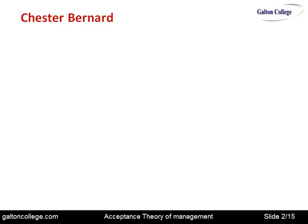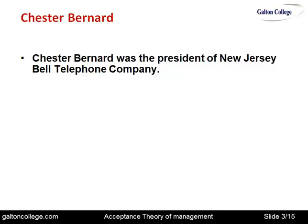Chester Barnard was the president of the New Jersey Bell Telephone Company, so that to some extent influenced his thinking about organizations — both in terms of how the company in which he was engaged was set out, how it was structured, and also the technology he was working with.